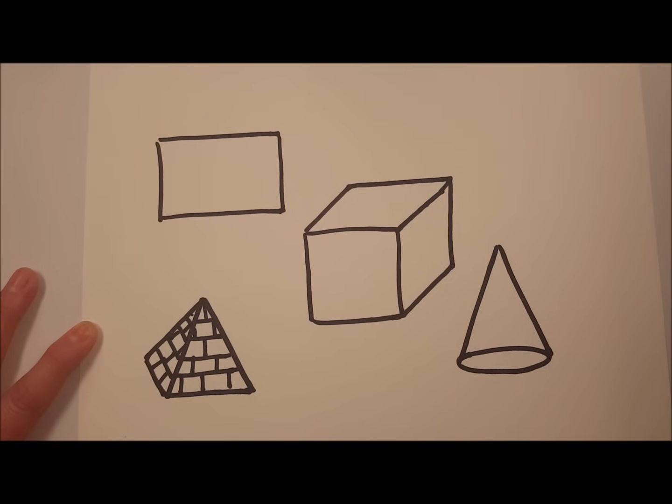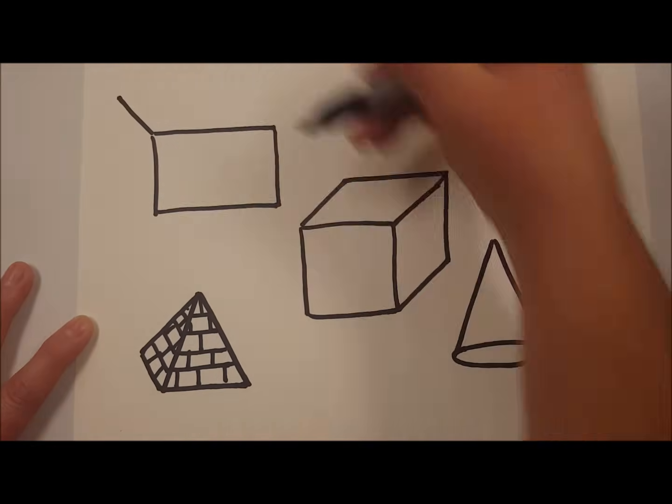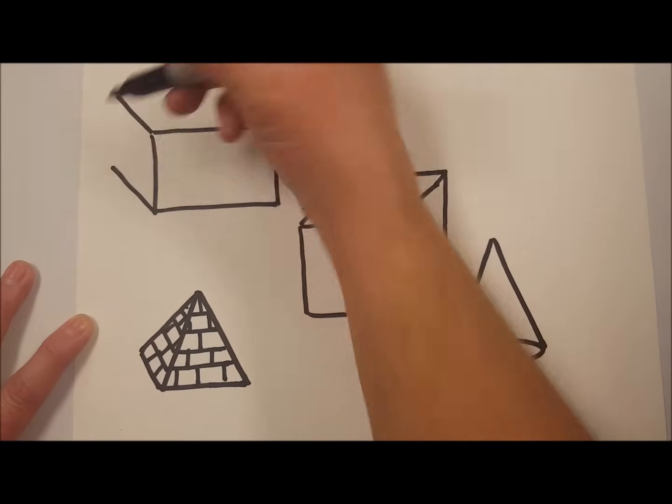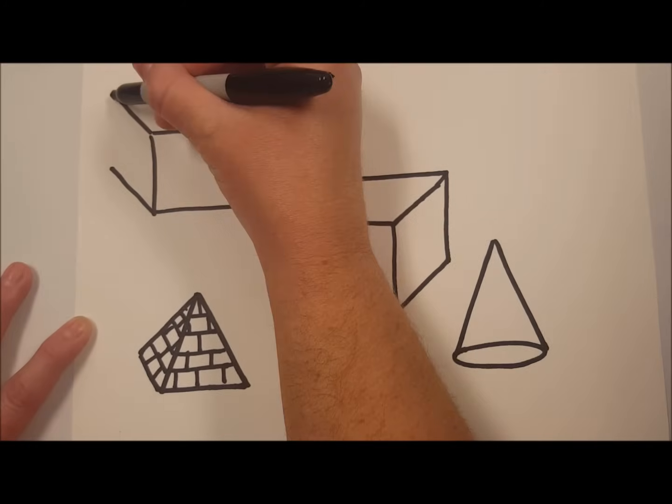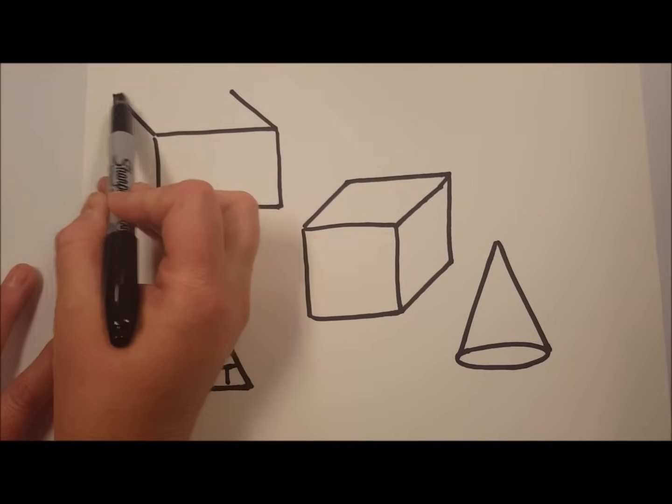And just like we did with the cube, we're going to add a diagonal going this way this time, diagonal and another diagonal. Then we'll connect those with a vertical line and a horizontal line.